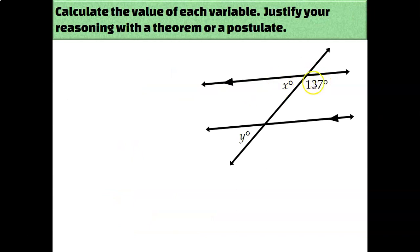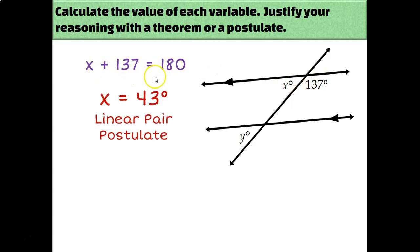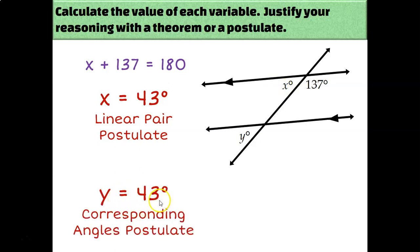This time, x and the numbered angle are a linear pair, which means they add up to 180. So x plus 137 equals 180, which means x must be 43 degrees by the linear pair postulate. Again, y and the numbered angle don't really have a direct relationship. But I can relate y back to x now that I know what it is — x and y are corresponding angles, both in the bottom left-hand corner, so they must be congruent. Since x is 43 degrees, y must be 43 degrees as well.